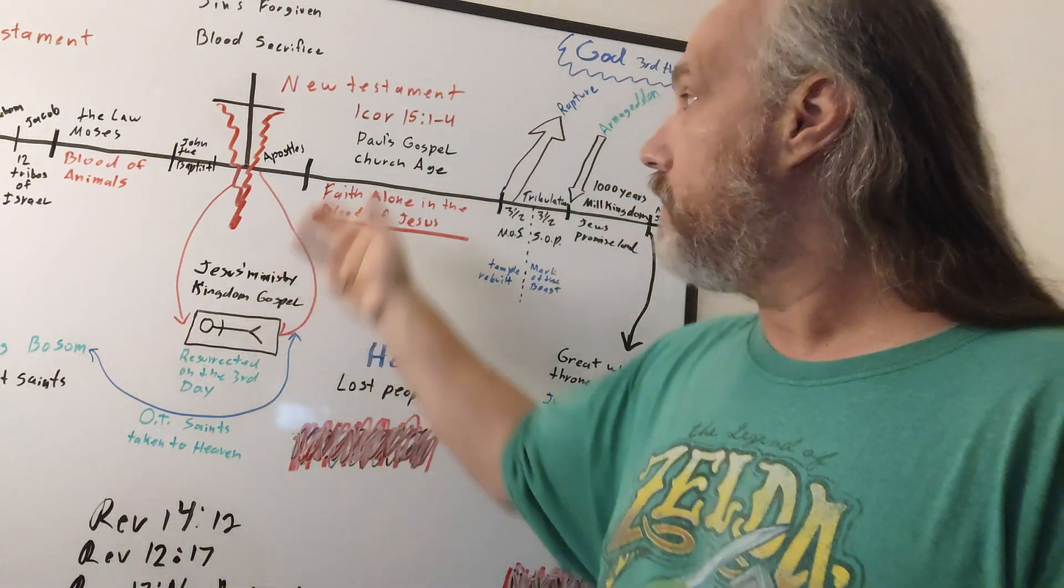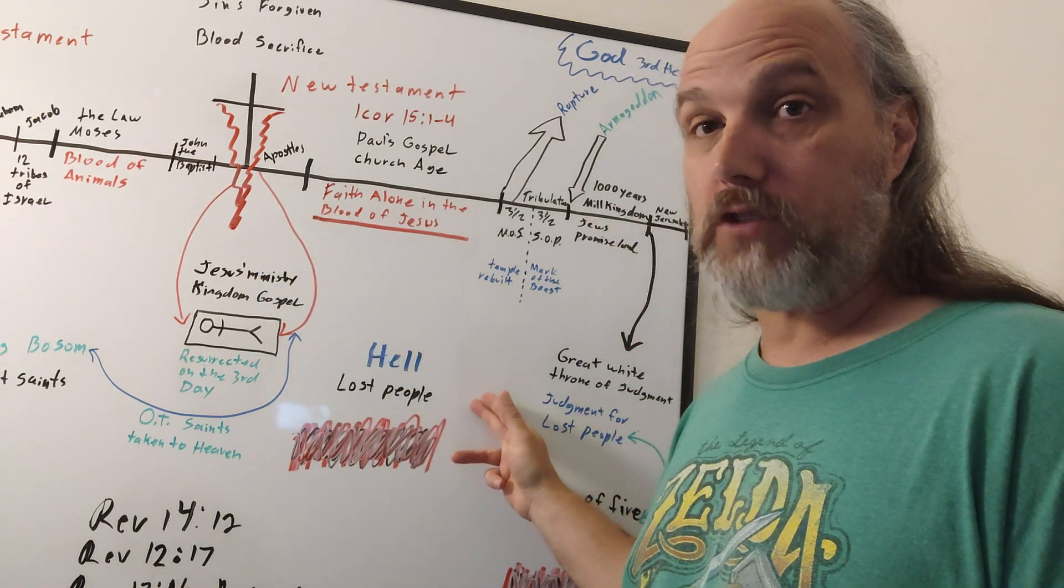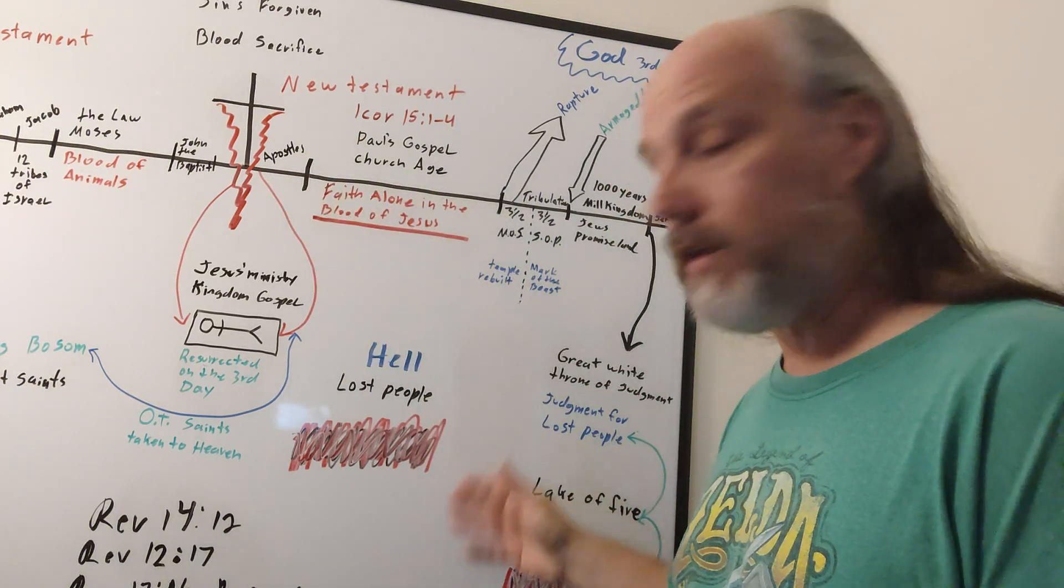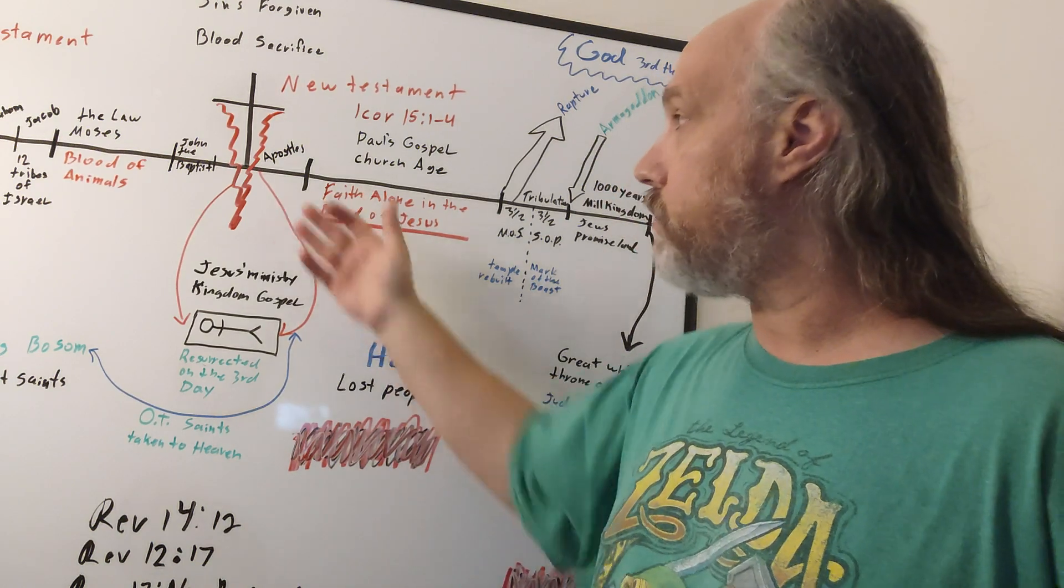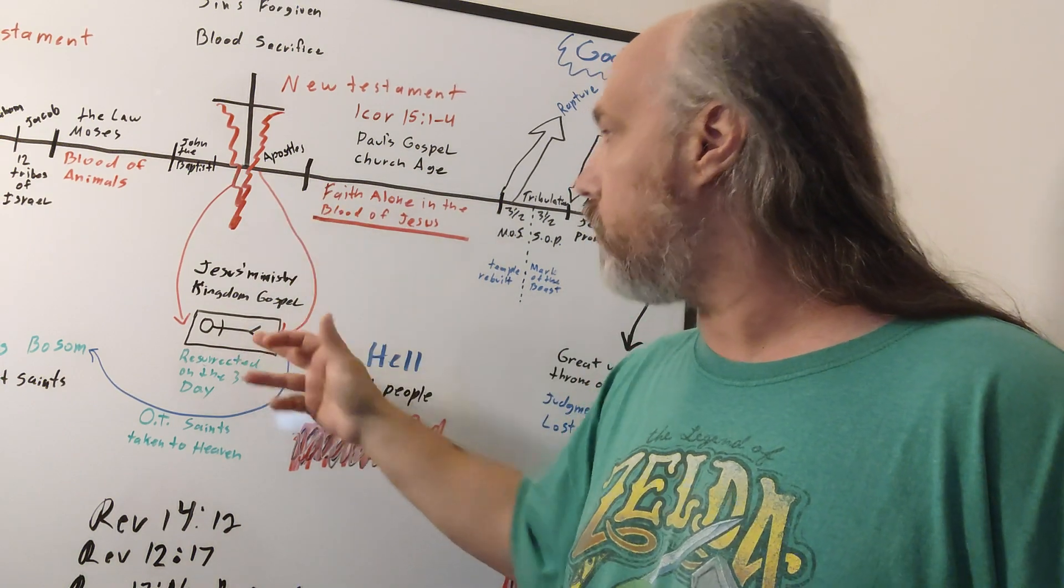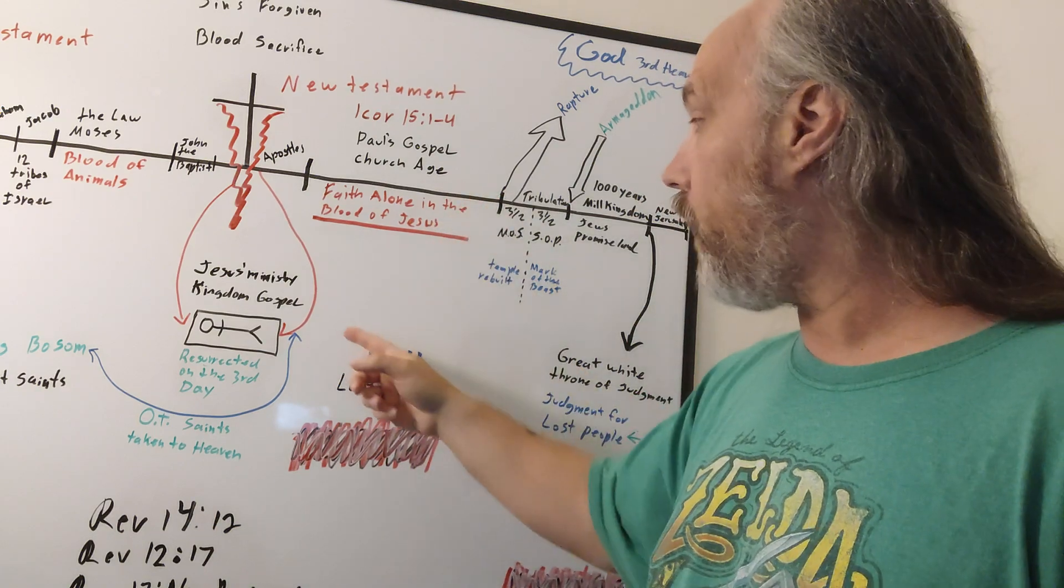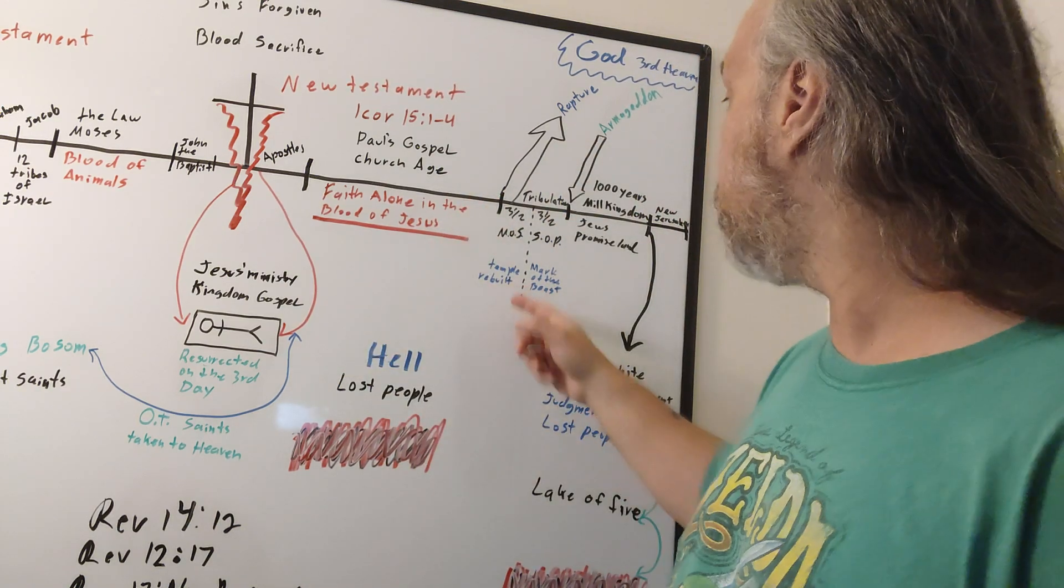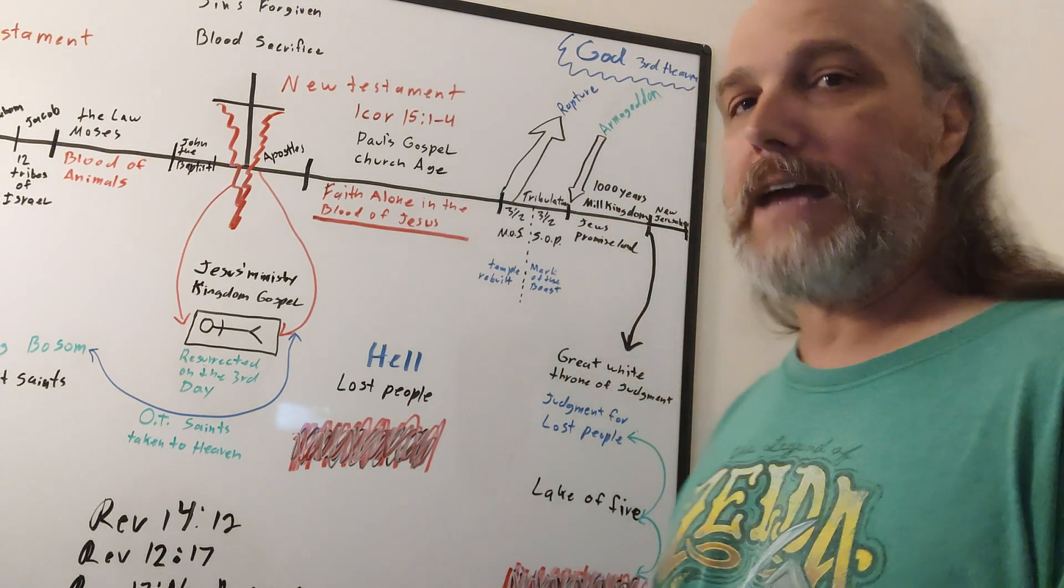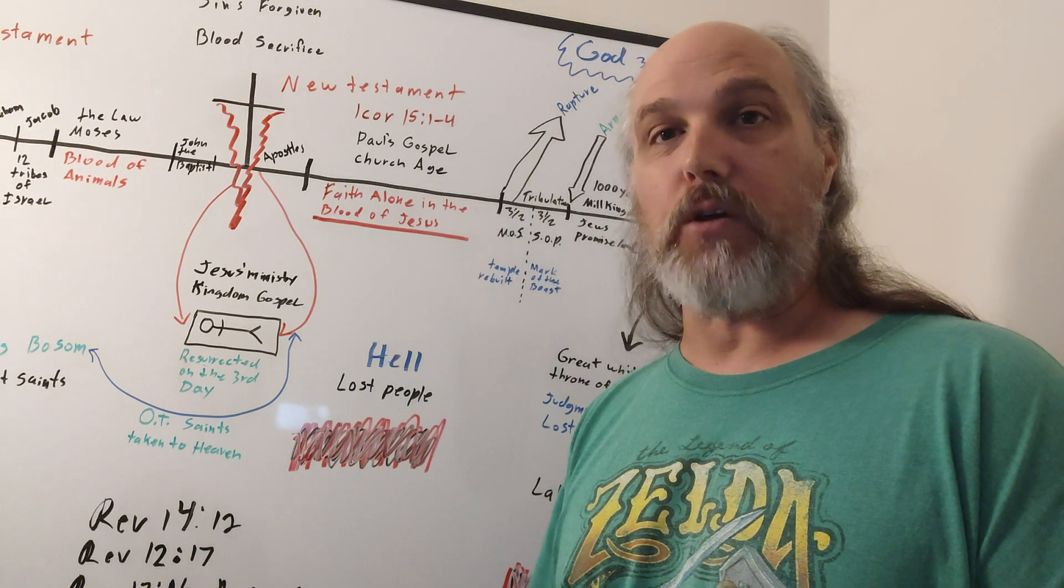It says, for I deliver you first of all that which also I received, how that Christ died for our sins according to the scriptures. How did he die for our sins? Well, he spilled his blood. Father God in heaven accepted that blood atonement. It says, and he was buried and he rose again in the third day according to the scriptures. He trusted what he did and how he did it. Well, what he did and how he did it, he died on the cross for your sins, spilling your blood. The blood is so important. If you do not believe that there has been a blood sacrifice made for your sins, you're going to hell. I'm not trying to be rude or mean or blunt with you in a mean way. I'm doing it because I love you. I don't want you going down here to hell and in a lake of fire.